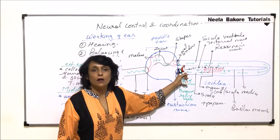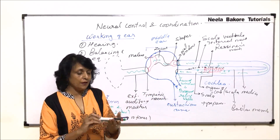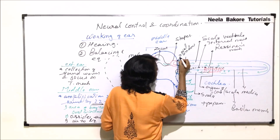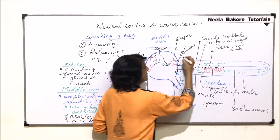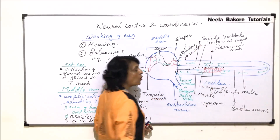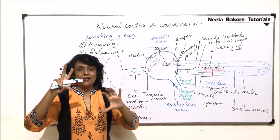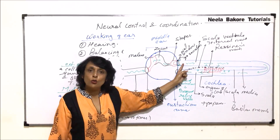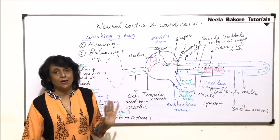The cochlea is attached to the sacculus part of the vestibule. The vestibule has two parts — the utriculus and the sacculus — and the bottom part of the sacculus is attached to the cochlea. So the cochlea is connected to both the sacculus and the middle ear.